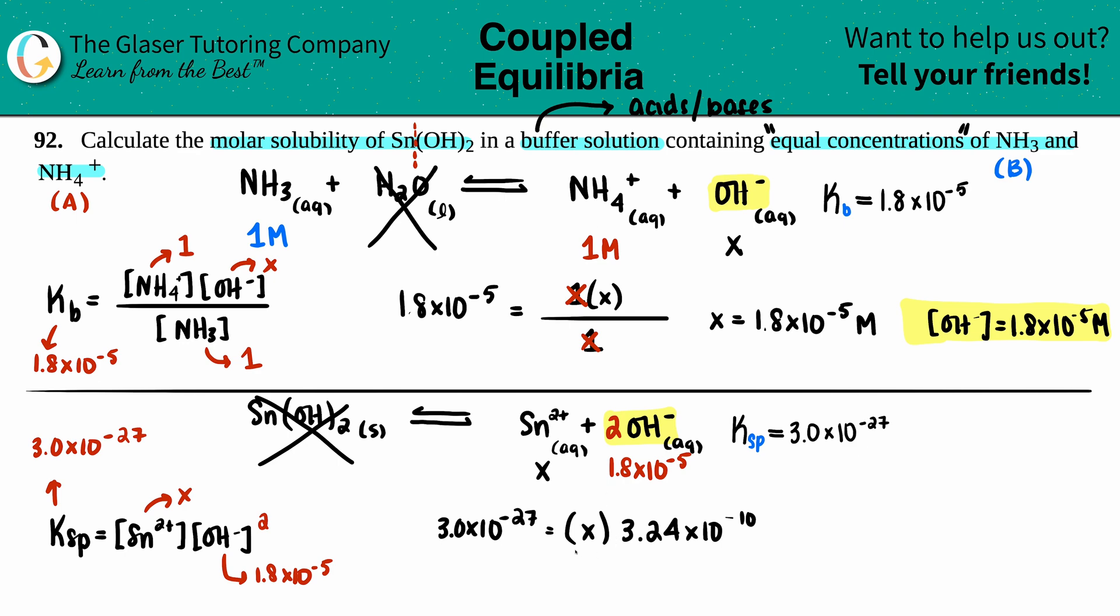Now just solve for x. Divide on both sides by that value, 3.24 times 10 to the negative tenth. This cancels out and now we're just left with x.